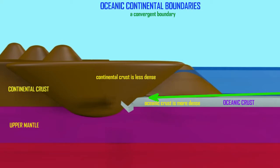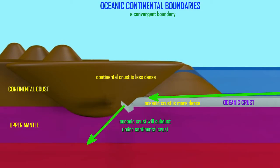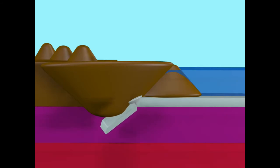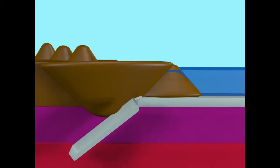In cases where oceanic plates meet continental plates, the oceanic plates are more dense and the continental plates are less dense. And so therefore the oceanic plates will subduct underneath the continental plates.